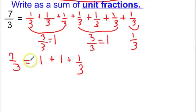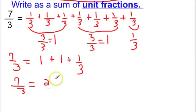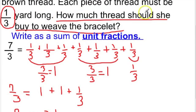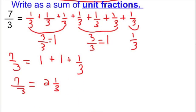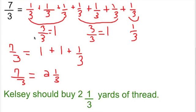We are showing this process to show how we change this to a mixed number. Now all we need to do is put our wholes together: 1 plus 1 is 2, and then we have the 1/3 that is left over. We have successfully changed 7/3 into a mixed number and answered the question. Kelsey should buy 2 and 1/3 yards of thread. Make sure you have taken great notes in your journal, and don't forget to log into Edmodo and let me know you watched the video. See you in class!